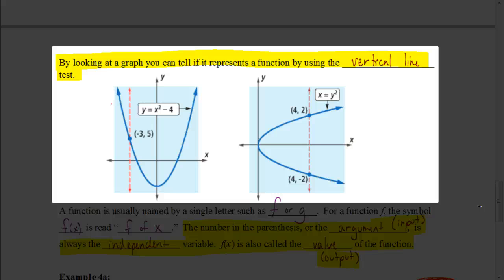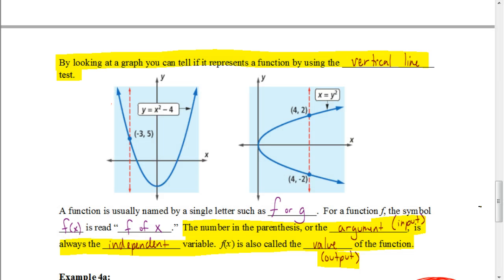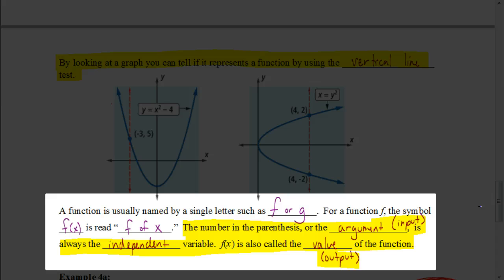Now, if it is a function, there's a special way that we write it using function notation. Now, we could use, when we refer to things using function notation, we name the function any single letter that we want. Now, the most common ones are F or G. Sometimes we'll also use H. Or if we're dealing with a story problem, dealing with a car's speed, for example, maybe you use C for the name of the function. Or if we're dealing with temperature, maybe use T for temperature for the name of your function.